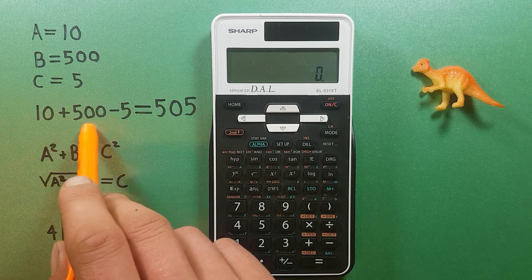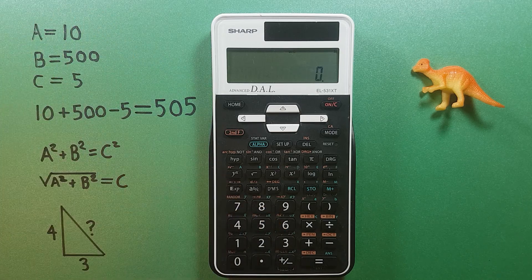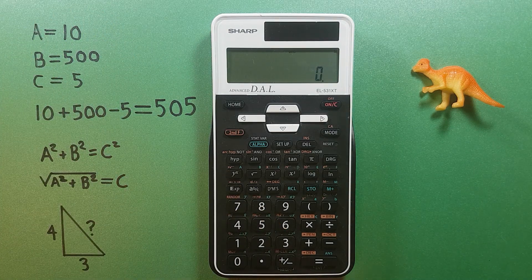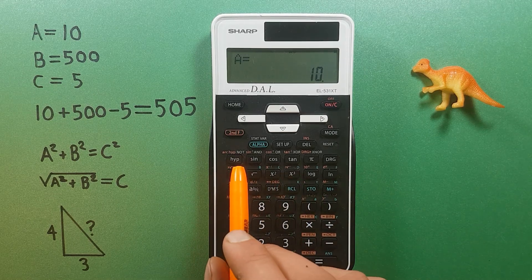Let's say we wanted to do this calculation with these numbers we had previously saved. Imagine they were very complex numbers that we couldn't just easily write down. We would use the RCL key to recall our A slot, plus RCL our B slot.